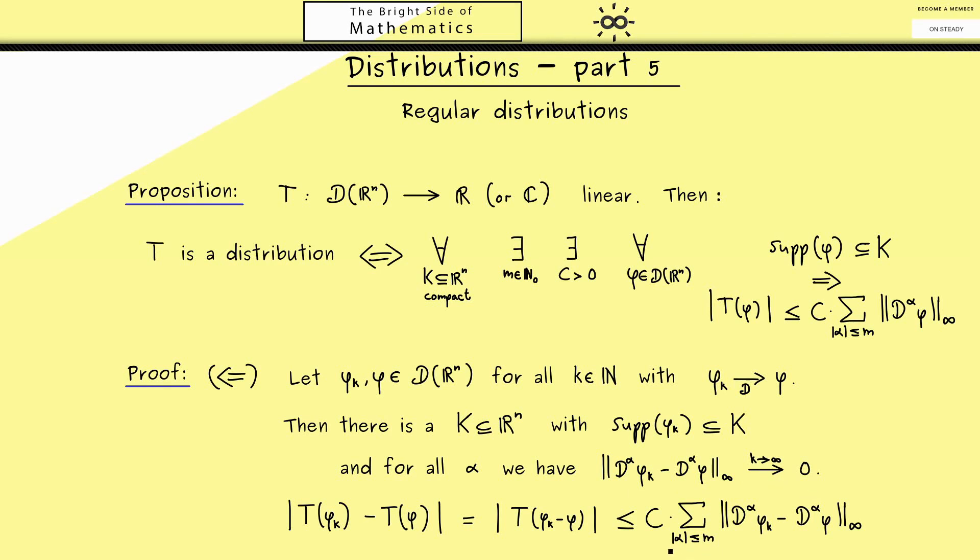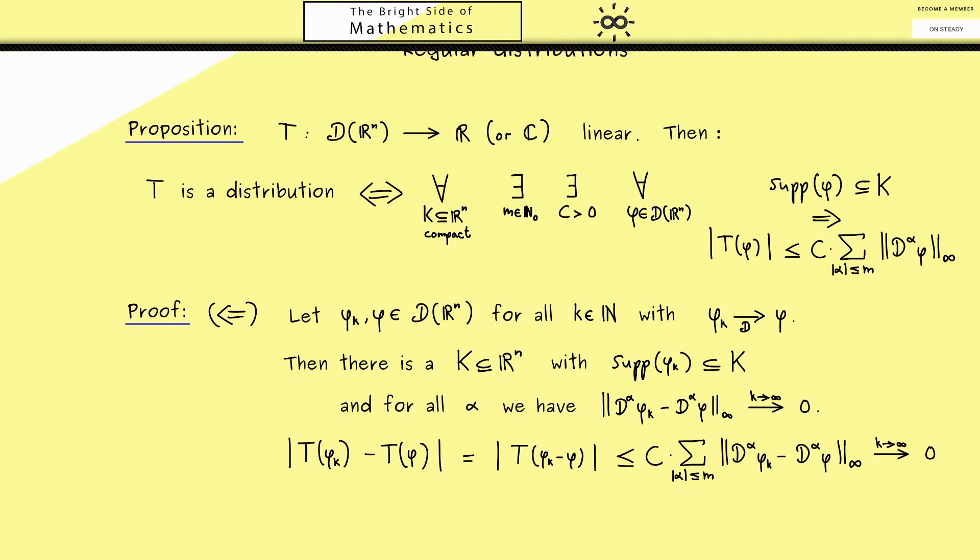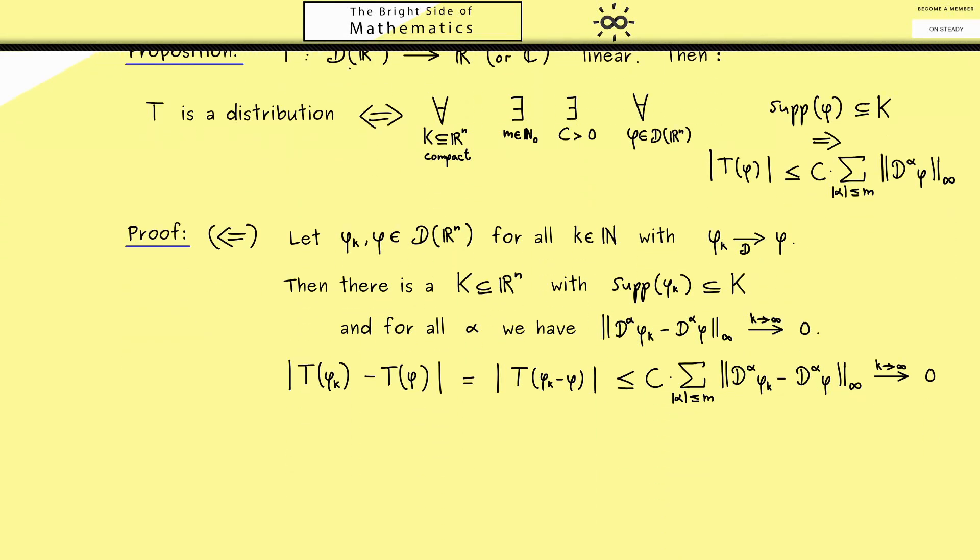And there you see we have what we want because this term goes to 0 when k goes to infinity. And please don't forget we have a finite sum here. So this is all we needed to show for the first part. Now let's go from the left hand side to the right hand side.